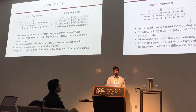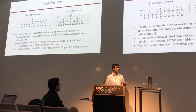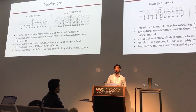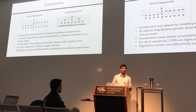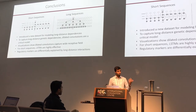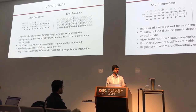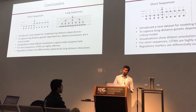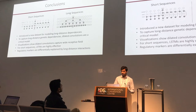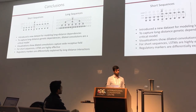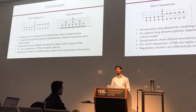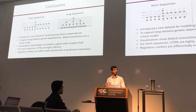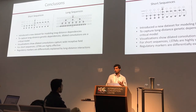The main conclusions are: for really short sequences on the order of a few hundred to a thousand, LSTMs are likely going to be effective, as that's the realm where LSTMs are really good in other fields like vision and natural language. When dealing with really long sequences, dilated convolutions show a lot of promise. The visualizations show that dilated convolutions capture a really long receptive field. However, different regulatory markers are differentially explained by long-term interactions, so we should think carefully about the types of markers we're modeling and pick our architecture accordingly.